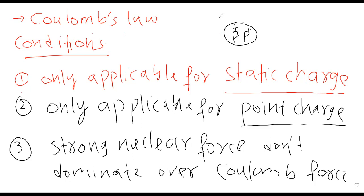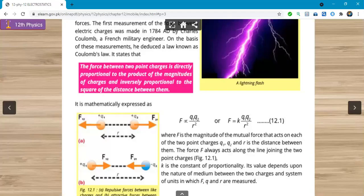These are the important conditions for giving Coulomb's law: first, it is valid for static charges; second, it is applicable for point charges; and third, the two charges must be placed at such a distance that the strong nuclear force does not dominate over the Coulomb force. Now we are going to discuss the statement of Coulomb's law. I will share the book screen and then explain it on the whiteboard screen.